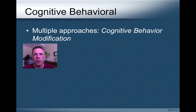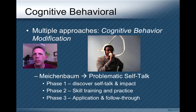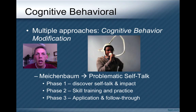One final model of cognitive behavioral counseling is cognitive behavior modification, developed by Meichenbaum, which focuses on problematic self-talk — the way we talk to ourselves and how that factors into our problems. There are three phases: first, figure out what the self-talk is and what impact it has; second, do skill training and practice thinking things differently; and third, how do you apply it in the real world and follow through when you get out there.